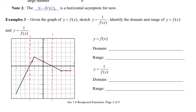We take the reciprocal of some y values: where we have positive 2, we get positive 1 half; where we have positive 1 half, we get 2. Connecting our points, we get the right portion of the graph. We can also take negative 6 giving 1 sixth, and negative 1 half giving negative 2, to graph the remaining sections.